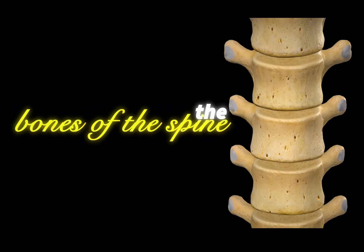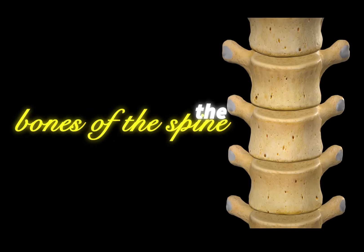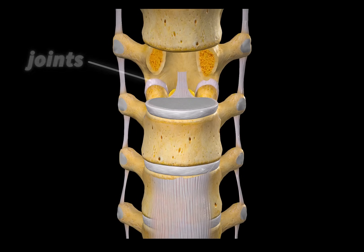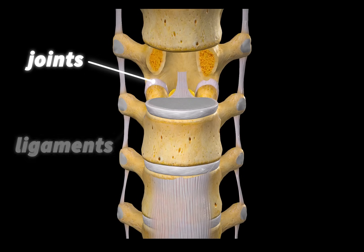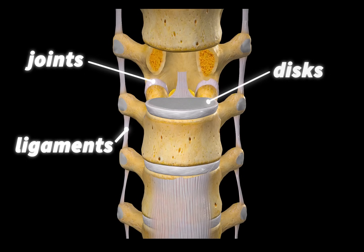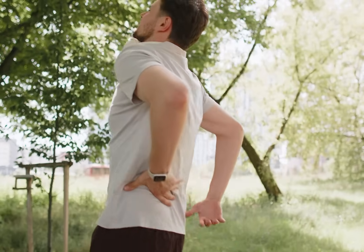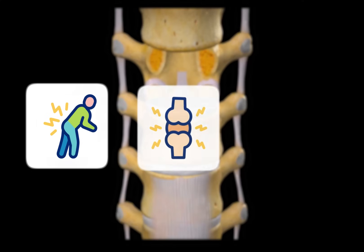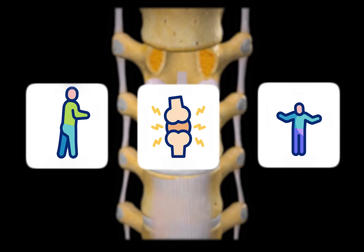In the last video we covered the bones of the spine. Today we will learn about the joints, ligaments and discs, how they hold the spine together and how injuries to those structures can result in pain, herniations and instability.